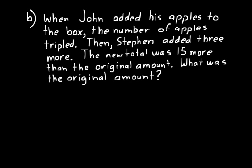When John added his apples to the box, the number tripled. So the original number we call n, and its amount tripled — that would be 3n. Then Stephen added three more, so that's 3n plus three. That new total — 'was' means equals. So 3n plus three equals fifteen more than the original amount, which is fifteen plus n, because on the left side we tripled n then added three.